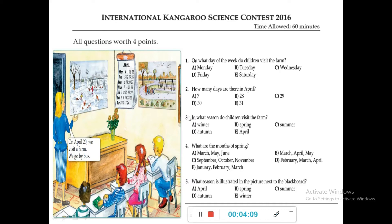Question 3: In what season do children visit the farm? April is a month of spring. The options are summer, autumn, winter, spring, and April — but April is a month, not a season, so that option is incorrect. Since the farm visit is in April, the answer is spring. B is the correct option.